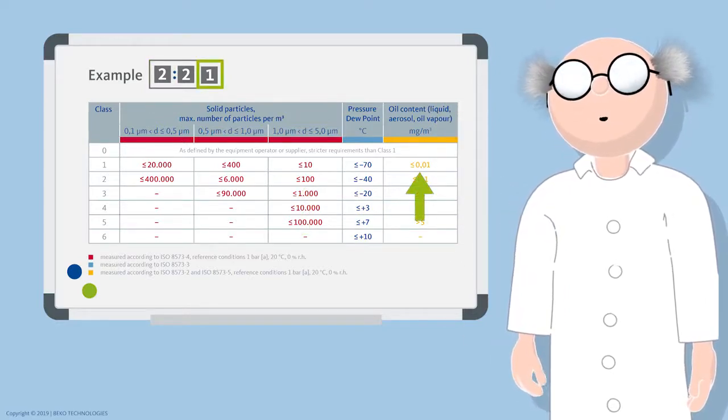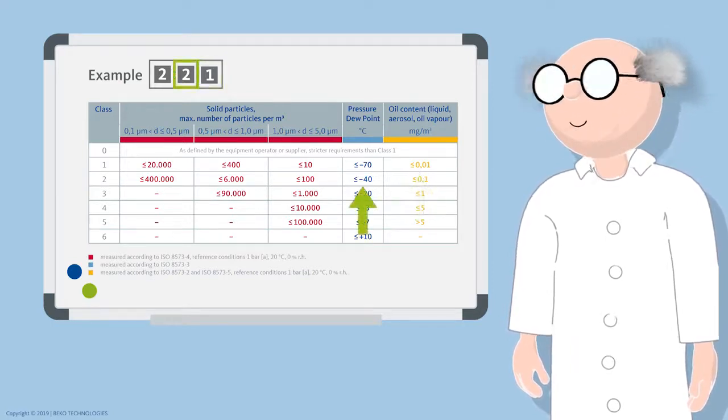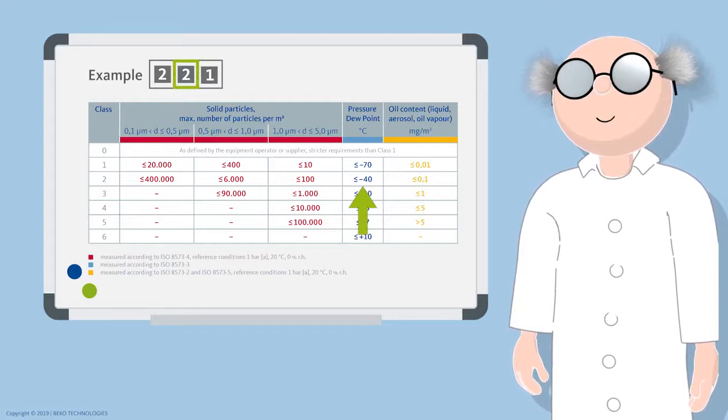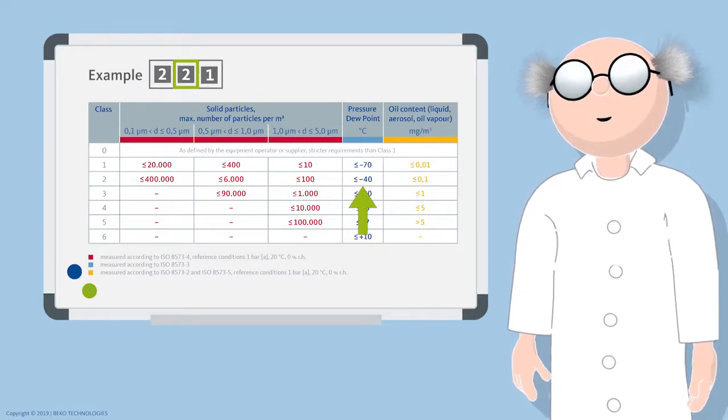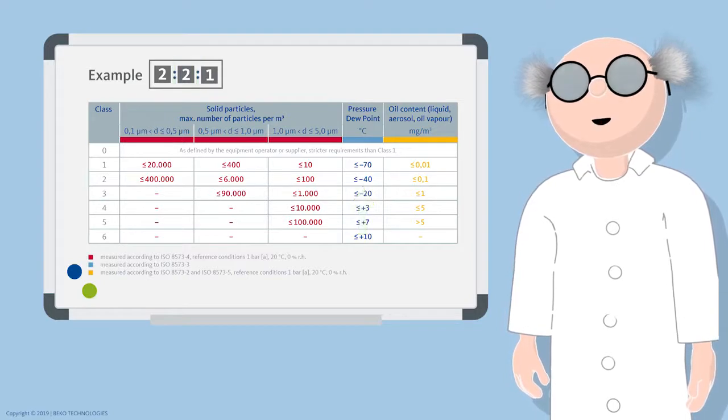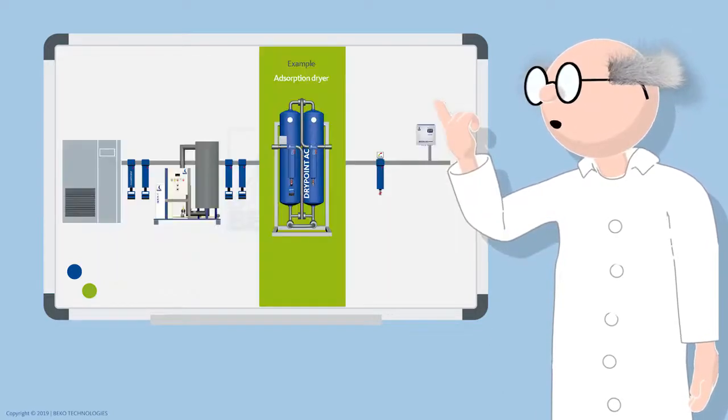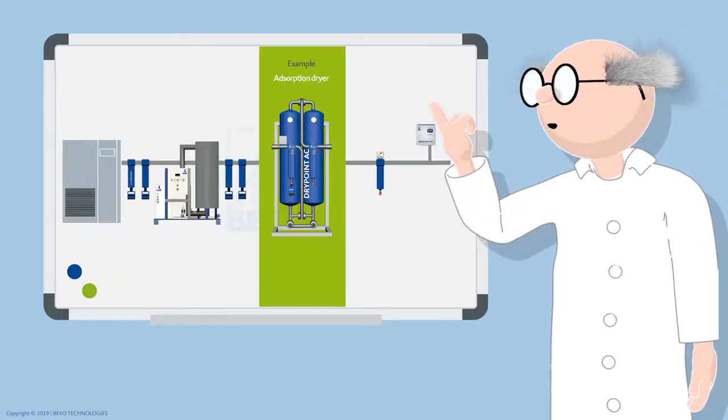If one now considers the middle figure for the residual moisture, a pressure dew point of minus 40 degrees Celsius is required. Special dryers such as adsorption dryers must be used for this very dry compressed air.